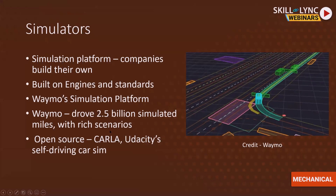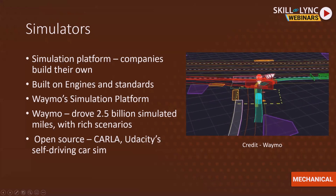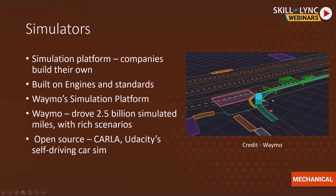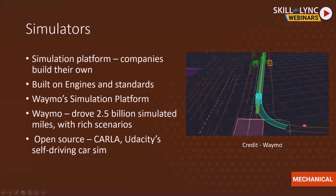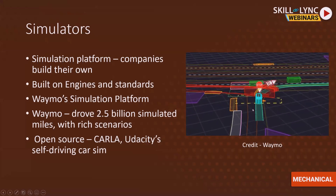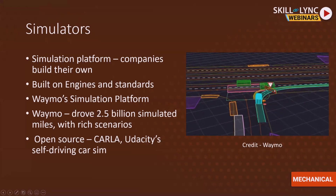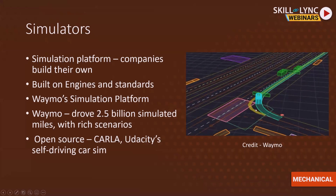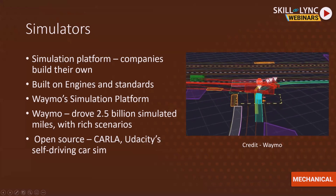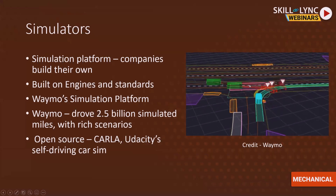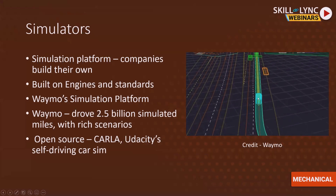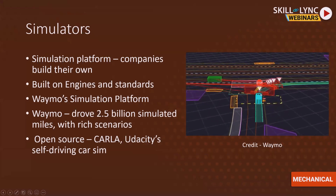I'd like to explain one example from Waymo's simulation platform. On the right you can see a small video — the blue car is at an intersection and wants to enter the lane on the right. It waits for other cars to go by, and as soon as the road is clear, it takes the lane and completes the scenario. These small scenarios are very crucial for testing.